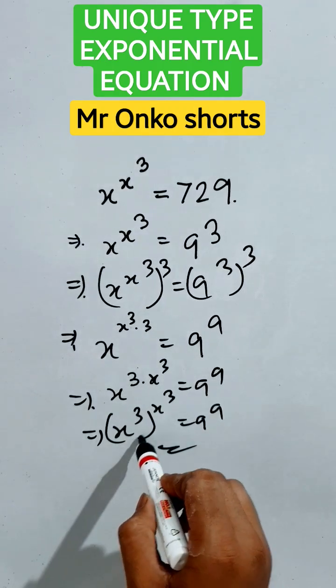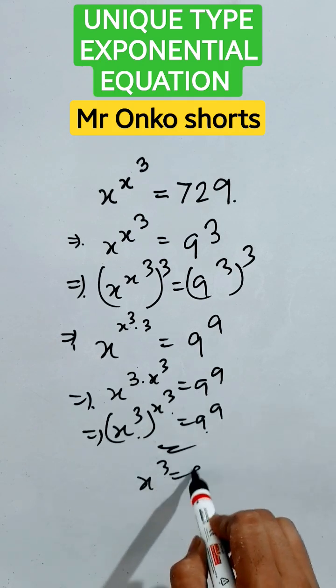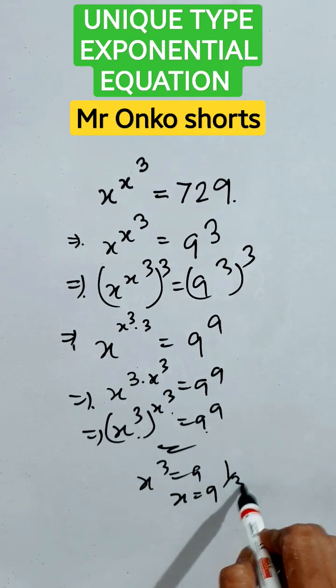Now, here x cube whole to the power x cube here 9 to the power 9. So, x cube is equals to 9. So, x is equals to 9 to the power 1 by 3. That's it.